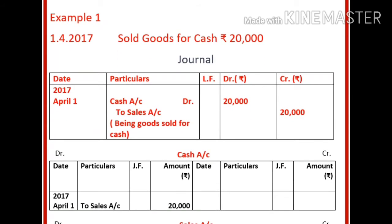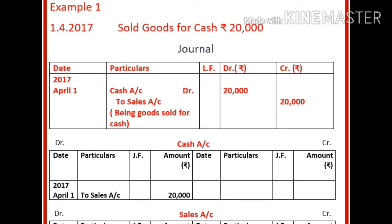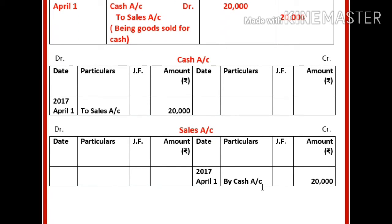First, cash account. Just look at this account. Cash account is being debited, so you will write on the debit side of the cash account. Here we have to write the name of the other account which is being affected by the transaction, and this other account is sales account. So here you will write down 'sales account' and the amount debited to cash account is 20,000. For the sales account, you will show it on the credit side, and the name of the other account in the sales account will be cash. This is the basic rule of how you post a transaction from journal to Ledger.